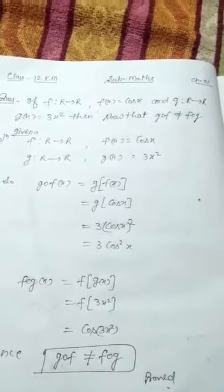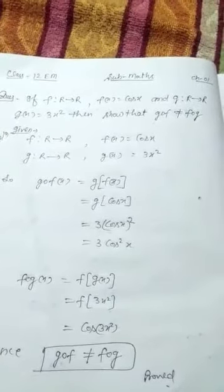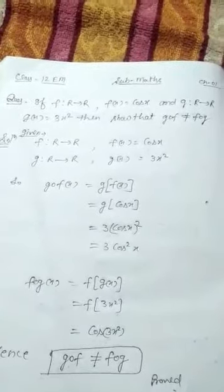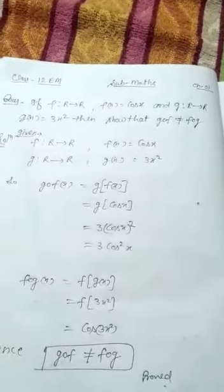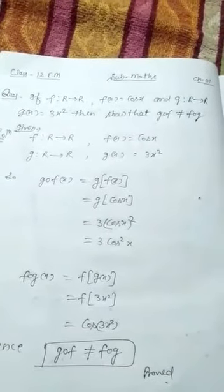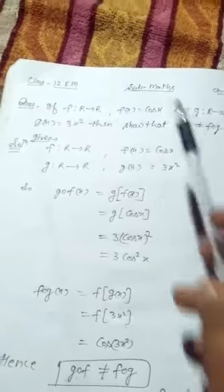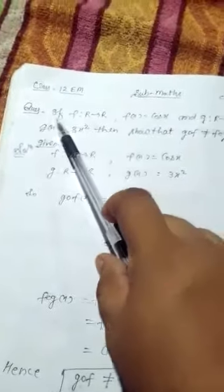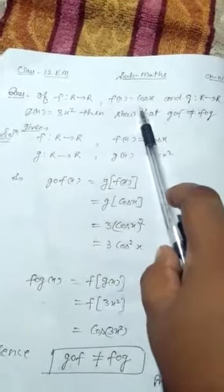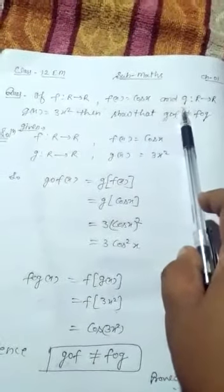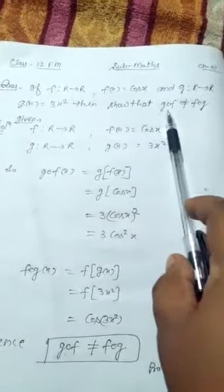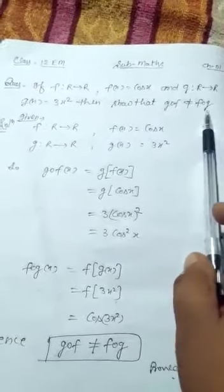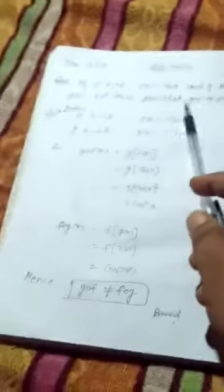Hello students, I'm Ajay Kumar. I will teach you Class 12th Maths. Today we will discuss a question based on functions. Question: if f from R to R with f(x) = cos x, and g from R to R with g(x) = 3x², show that gof is not equal to fog.